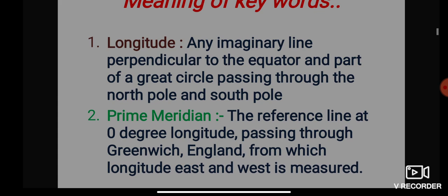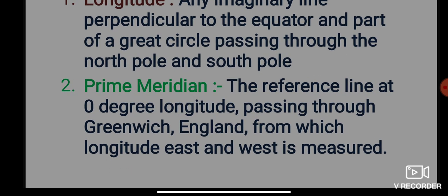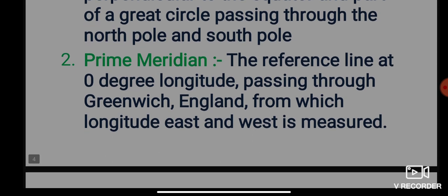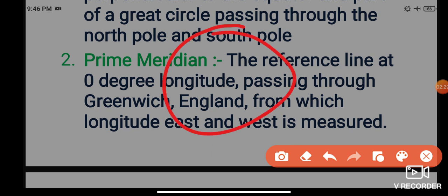What is the prime meridian? It is the reference line at zero degrees longitude passing through Greenwich, from which longitude east and west is measured. The prime meridian is the line indicated in the middle — the reference line at zero degrees longitude passing through Greenwich, from which longitude east and west is measured.